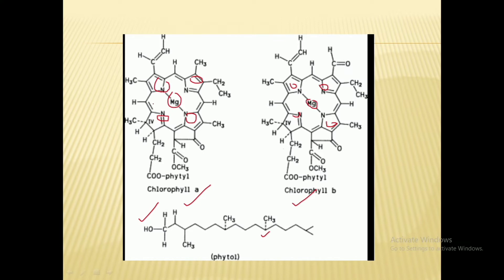There is presence of a CHO group at the third carbon of the second pyrrole ring in the case of chlorophyll B, but in chlorophyll A there is presence of CH₃ at the similar position. This is the only difference between the two structures.